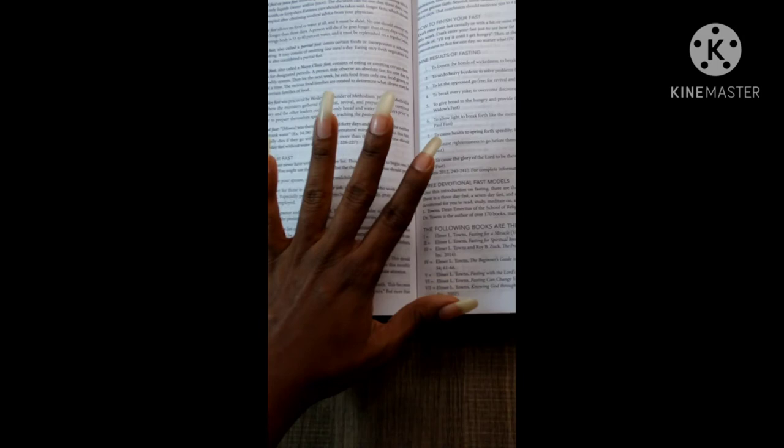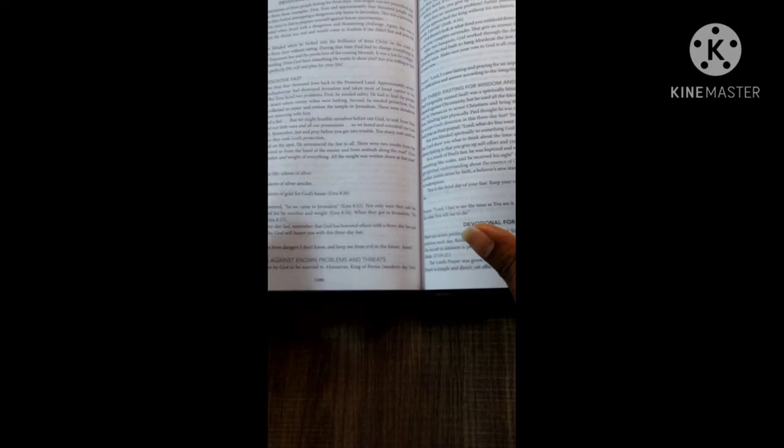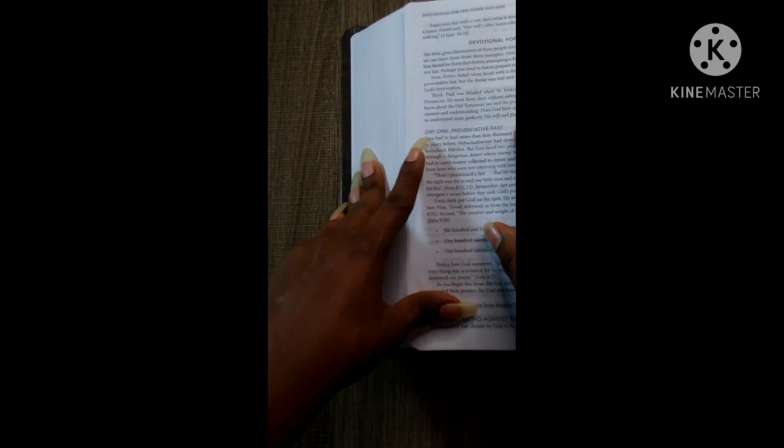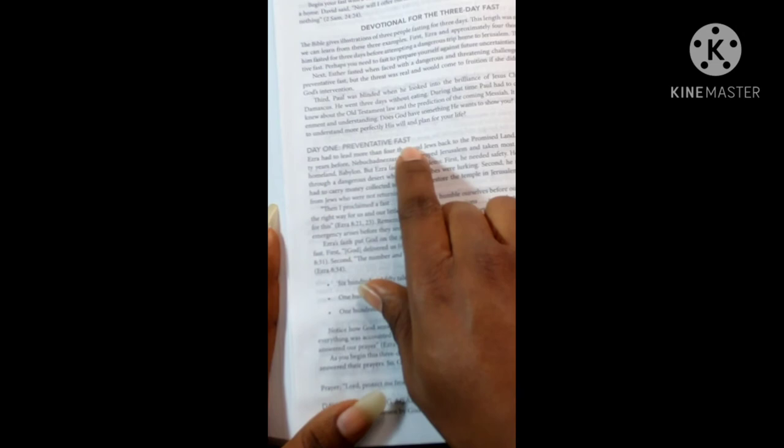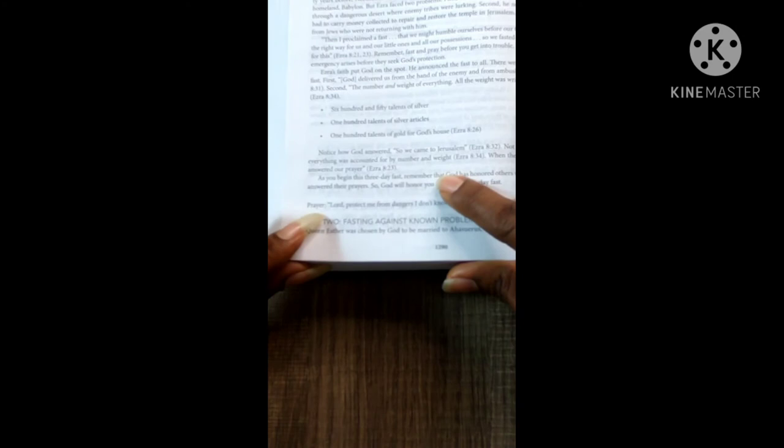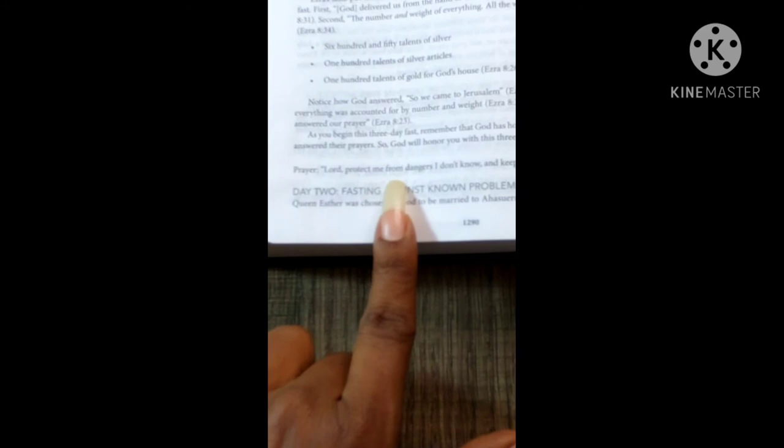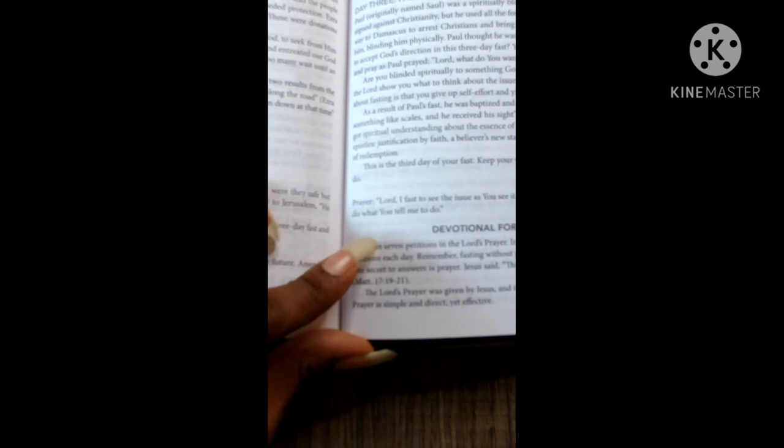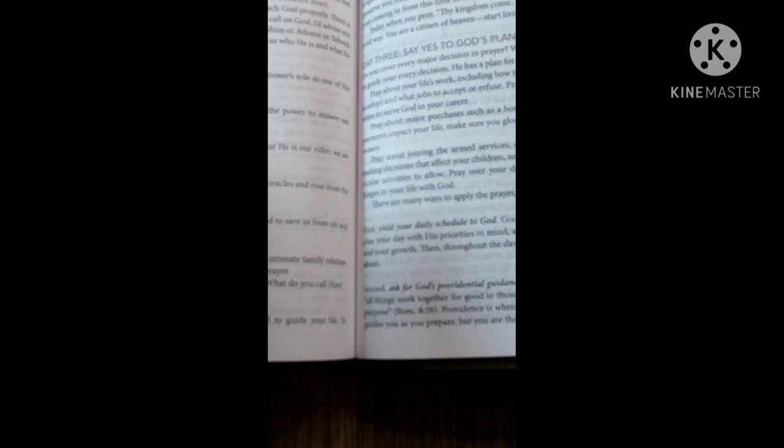If you guys want me to do a review, like I said, of Dr. Elmer Towns' book, which is good at explaining the different types of fasting, like the Ezra, the Discipleship fast—here's three-day devotional fast. It has a three-day devotional fast, a seven-day devotional fast, and a 21-day devotional fast. For the three-day one, right here, devotional fast—three-day devotional fast—has day one: Preventative Fast. Then it has a prayer right here. Let me see if I can zoom in a little bit. The Lord's Prayer. Then it has day two: Fasting Against Known Problems and Threats. Prayer, it has a prayer right here. Then this is devotional for seven-day fast.